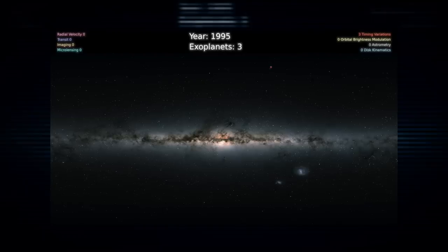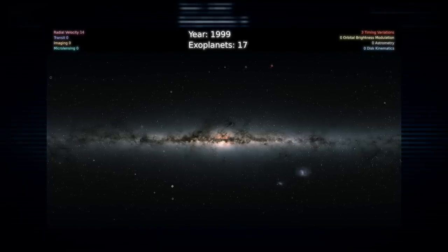An exoplanet is just a planet around somebody else's star. It's not orbiting the sun. Before 1995, we thought there might be a lot of planets out there, but we didn't know it.